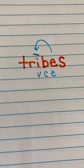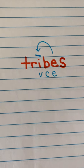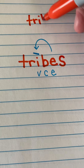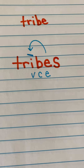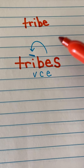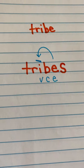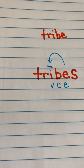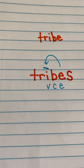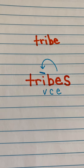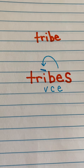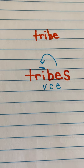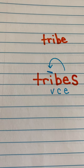So before, we had the word tribe — that means one tribe. When I add an S at the end, that makes it more than one tribe. It could be two tribes, it could be eleven tribes, we don't know. But when you add the suffix S, it makes the word plural, and plural means more than one.